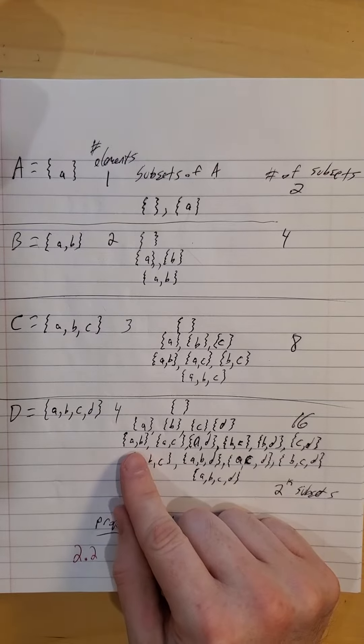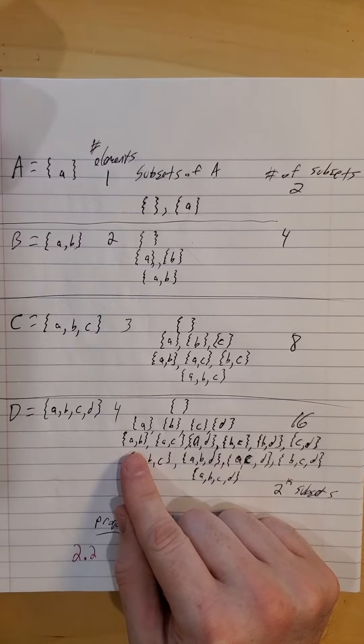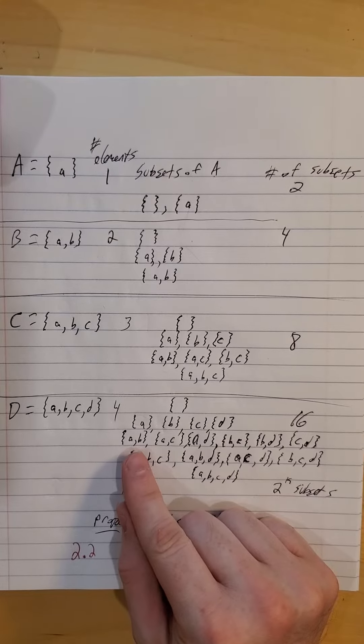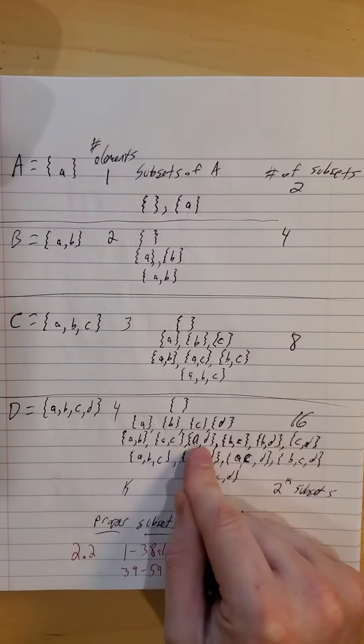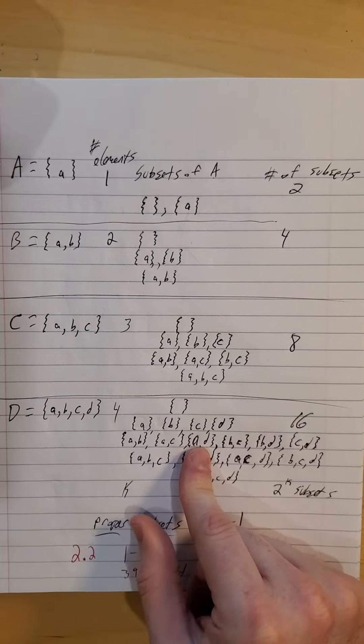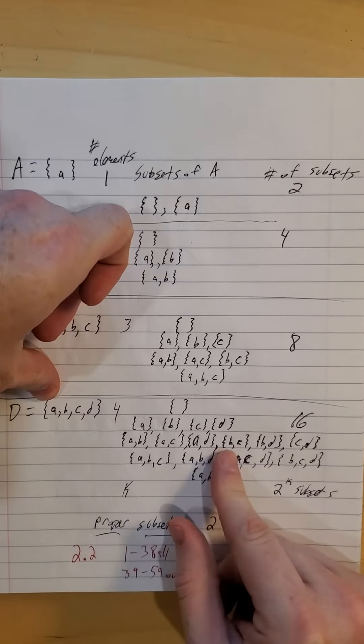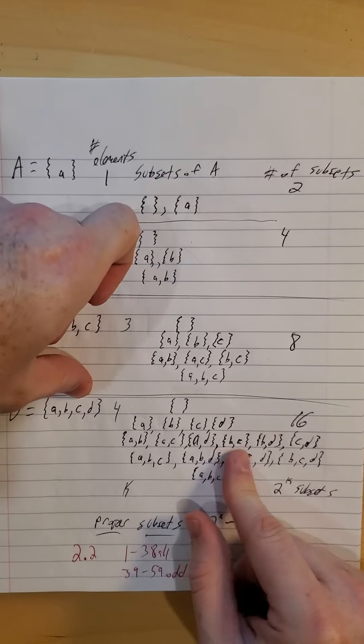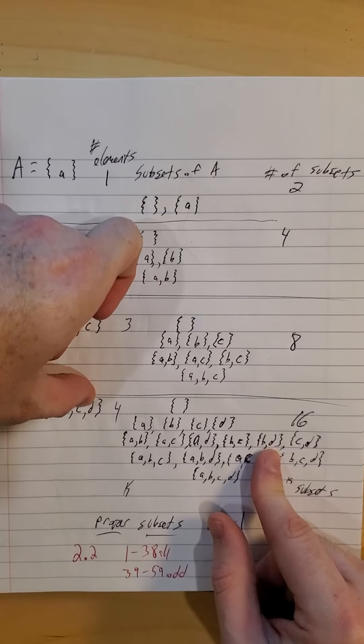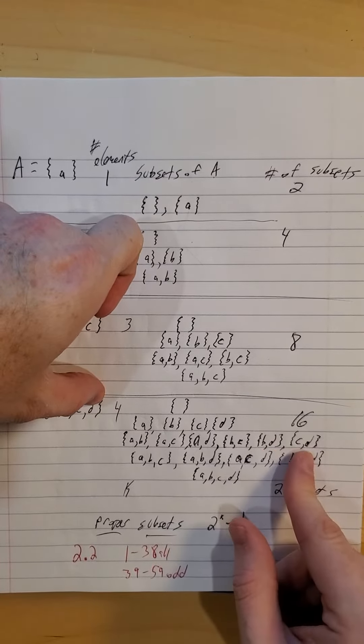And then we have six ways where we can have two out of the four: A and B, A and C, A and D—that runs us out of all of the A ands—and we have B and C, B and D, that runs us out of the B and something else, so then C and D.